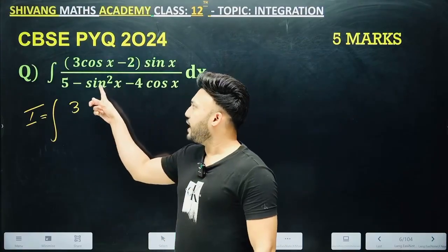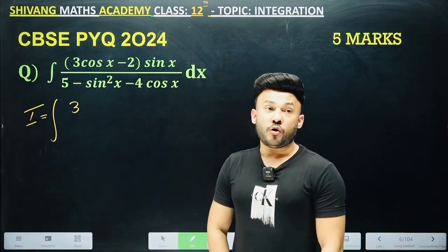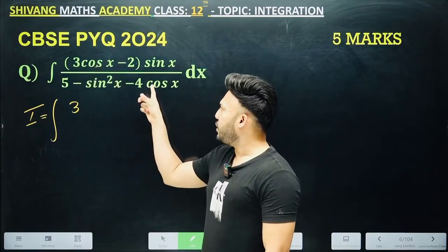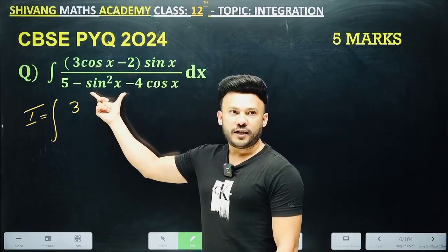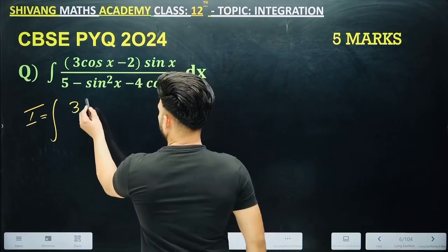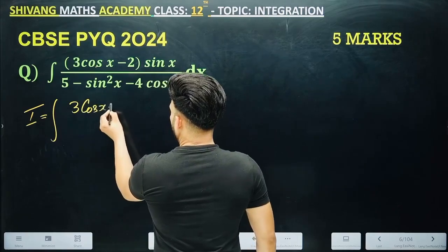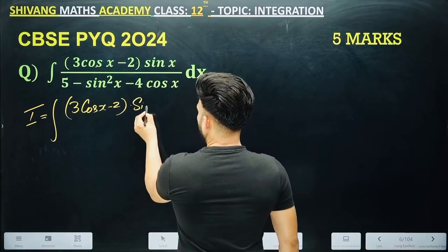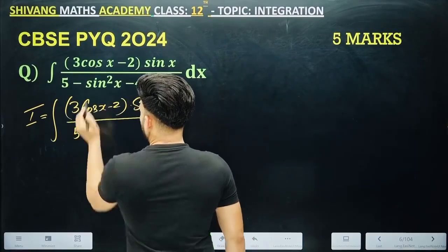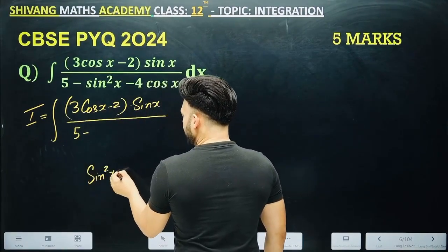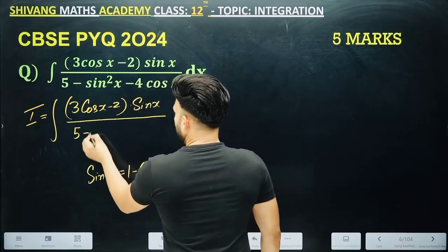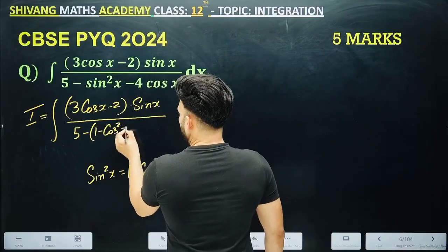The derivative of sin x is cos x, and the derivative of cos x is minus sin x. There is cos x here as well, so if we convert sin squared x into terms of cos — using sin squared x = 1 minus cos squared x — the denominator becomes 1 minus cos squared x minus 4cos x.